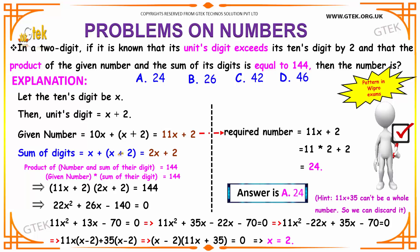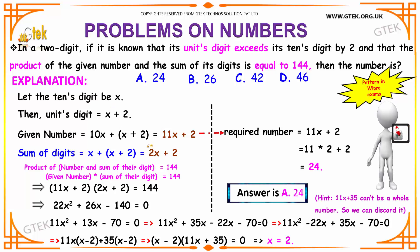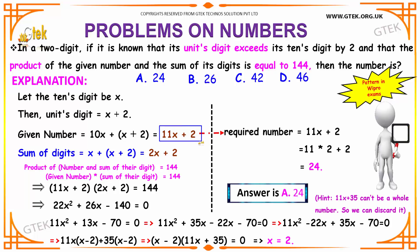You have the sum of the digits to be found out. That is nothing but x plus x plus 2, which is equal to 2x plus 2. It is given that the product is 144. Hence, the product of the number and the sum of the digits is 144. So, the number is 11x plus 2 and the sum of the digits is nothing but 2x plus 2. Multiplying both, you will get 144.